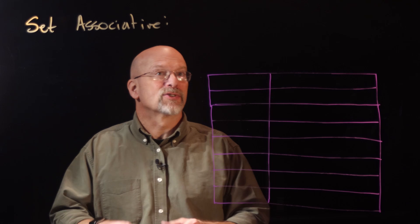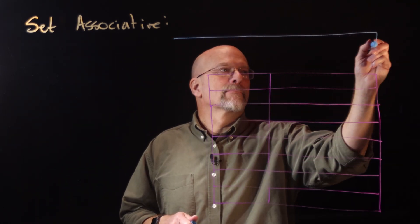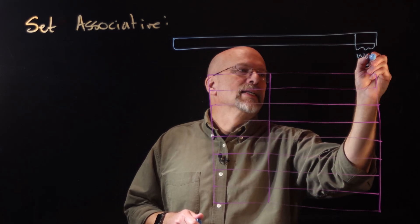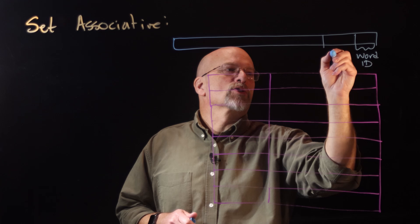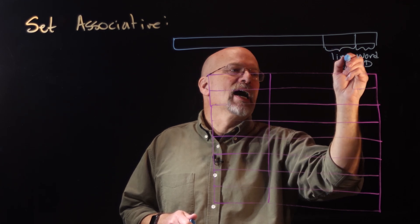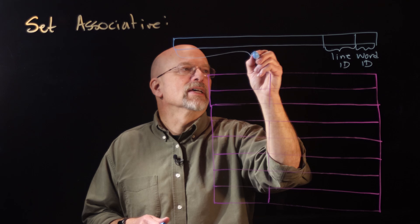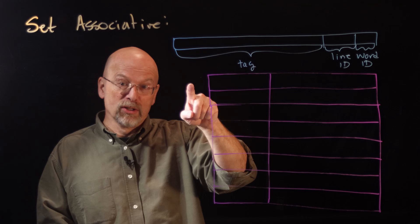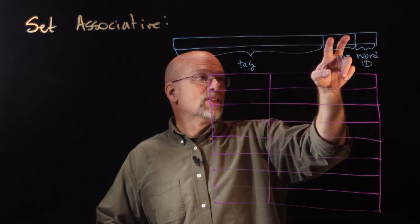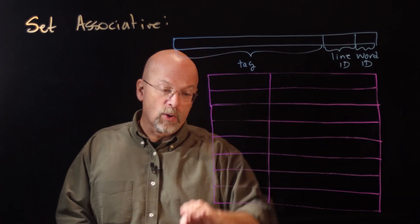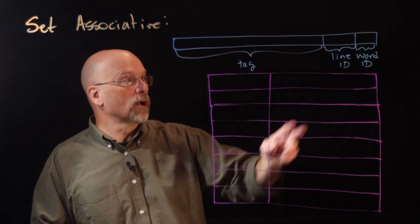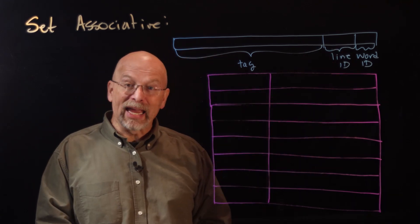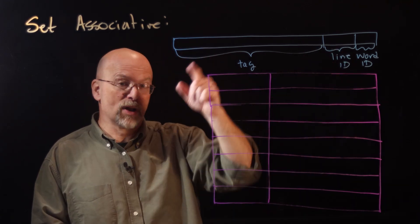We had the full address with the word ID bits, then the line ID bits, and then the rest as the tag. We numbered the lines from all zeros to all ones. The number of bits for the line ID corresponded to the number of lines. So if there were three bits for the line ID, then there were eight lines in the cache that a block could be mapped to.